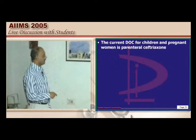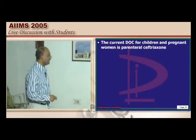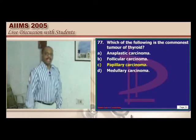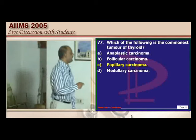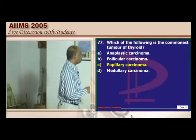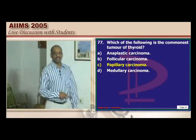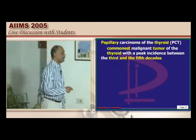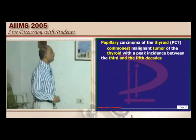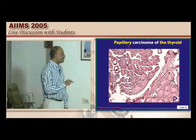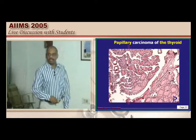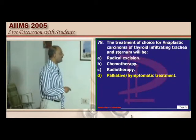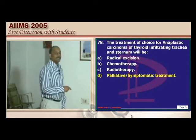Enteric fever in pregnancy — the treatment of choice is undoubtedly parenteral ceftriaxone. The commonest human thyroid tumor is papillary carcinoma of the thyroid, peaking in the third to fifth decade.